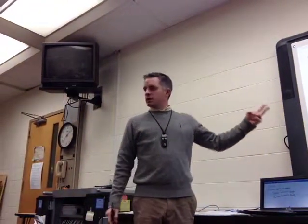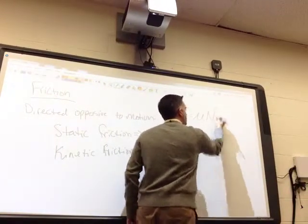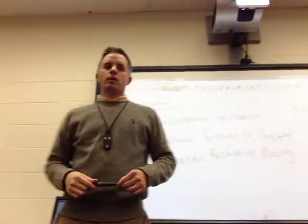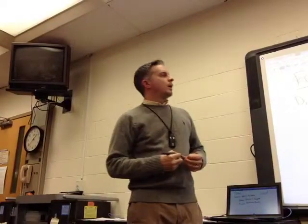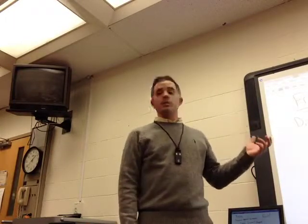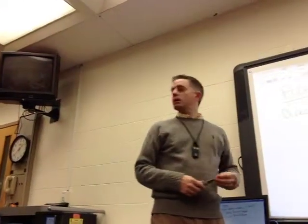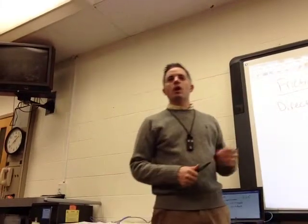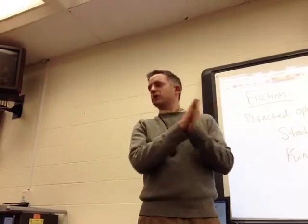There are two different types of friction, but they follow the same equation. We know that friction is equal to the coefficient of friction times the normal force. The coefficient of friction — we pronounce it mu, it's a Greek letter mu, kind of like a script U. Mu is just a number that you can look up in a chart. It gives you an idea of how much friction is going to occur between two surfaces.